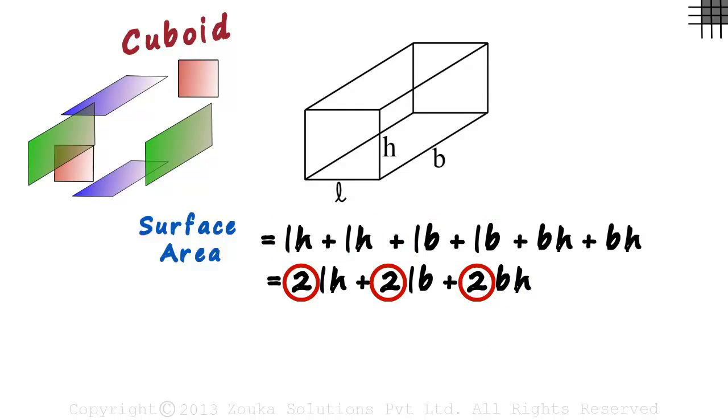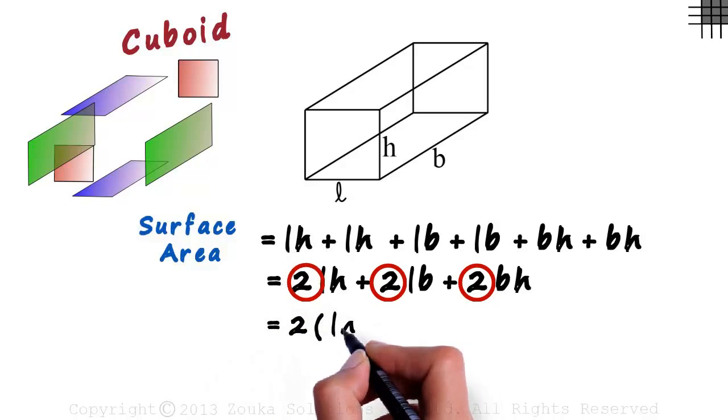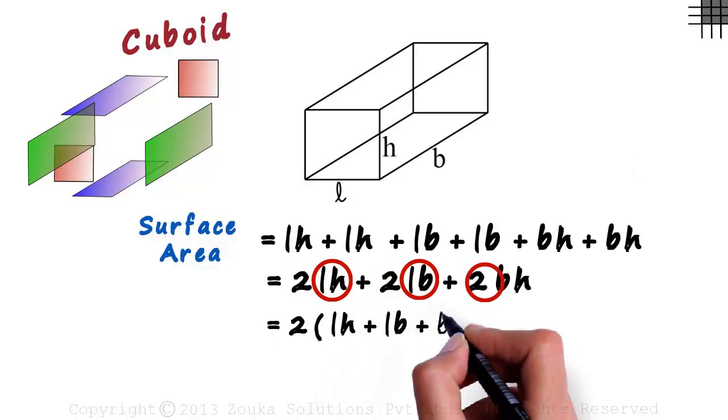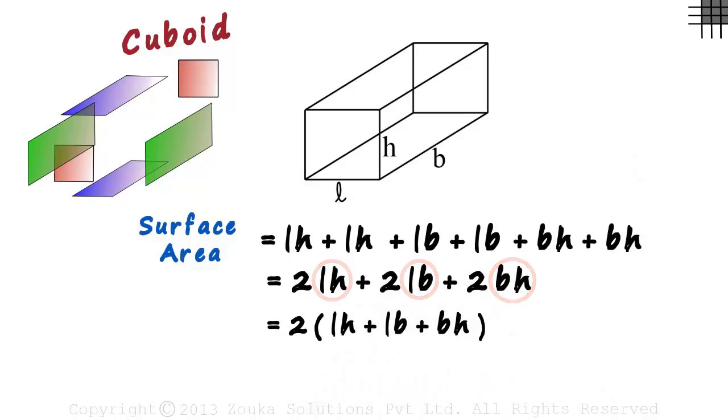As 2 is a common factor to all the terms, we write it as 2 multiplied by LH plus LB plus BH. That's how simple the concept of surface area is.